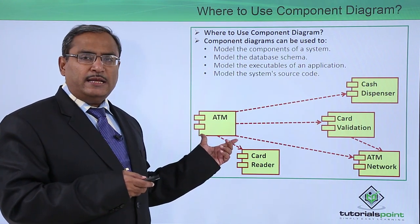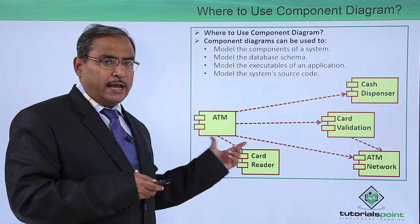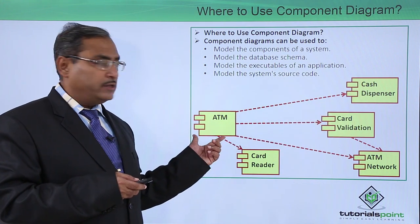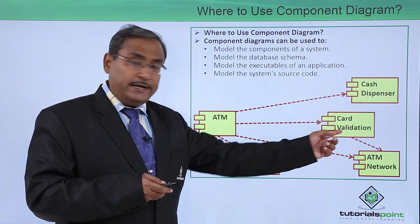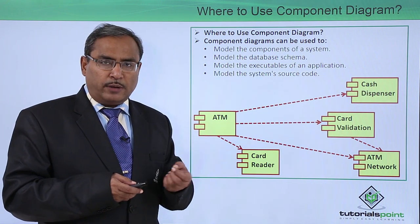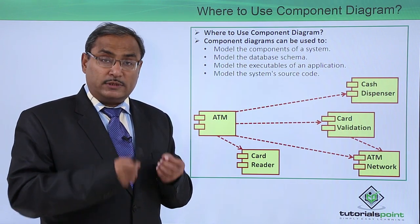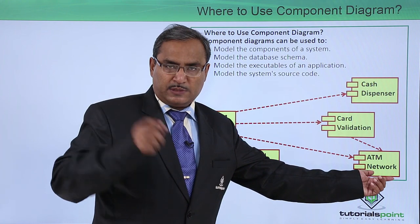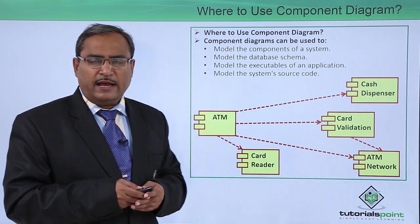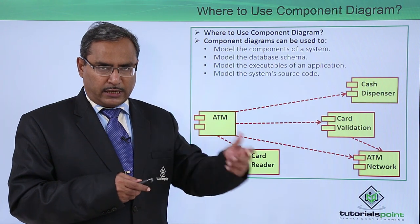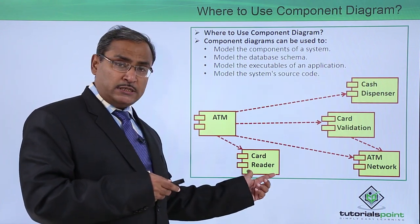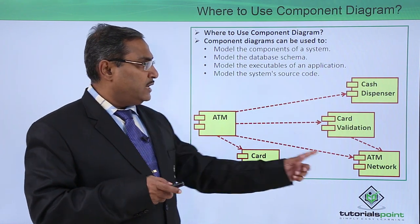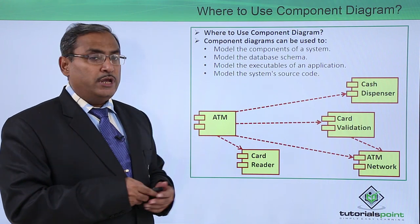Let us consider one ATM transaction as an example. ATM is one component, and there are multiple other components such as the cash dispenser, card validation — because whenever we do a transaction through a debit or credit card, we provide a PIN that is verified against the respective ATM network and database server to check whether the PIN is valid and matches the card number. There is also a card reader, which reads the card and retrieves card-related information. These are the different components used in an ATM transaction.